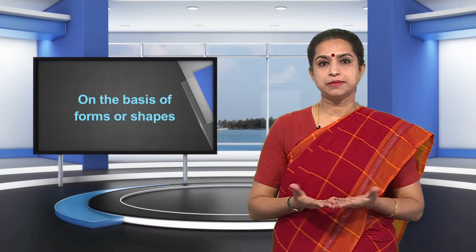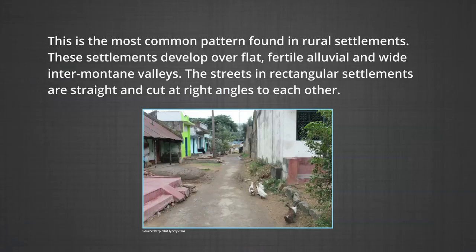Some important patterns of settlements are: rectangular pattern — the most common settlement pattern found in rural areas. These settlements develop over flat, fertile, alluvial, and wide inter-mountain valleys. The streets in a rectangular settlement are straight and cut at right angles to each other. Villages in the Sutlej-Ganga plain in India, planned settlements of Germany, Malaysia, Israel, and France are examples of rectangular pattern.